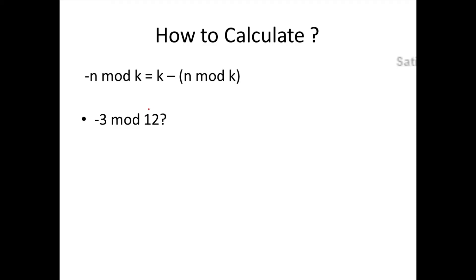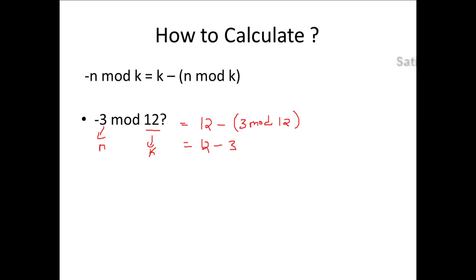Take minus 3 mod 12. Here n is 3 and k is 12. Substituting into the formula: k minus (n mod k) = 12 minus (3 mod 12). Since 3 mod 12 is 3, we get 12 minus 3, which equals 9.